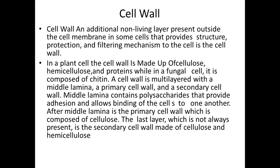Cell wall is an additional non-living layer present outside the cell membrane in some cells that provides structure, protection and filtering mechanism to the cell. In a plant cell, the cell wall is made up of cellulose, hemicellulose and proteins, while in a fungal cell it is composed of chitin. A cell wall is multi-layered with a middle lamina, a primary cell wall and a secondary cell wall.